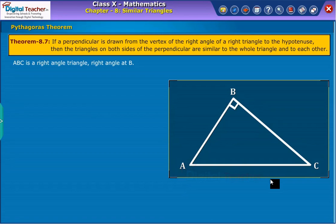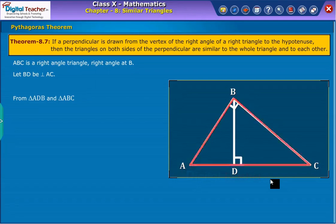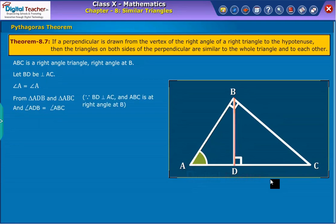Take a right triangle ABC having right angle at B. Consider a line segment BD perpendicular to hypotenuse AC from the triangle ADB and triangle ABC. We get angle A is common in triangle ADB and triangle ABC. And as BD is perpendicular to AC and triangle ABC having right angle at B, so we get the angles ADB and angles ABC are equal.